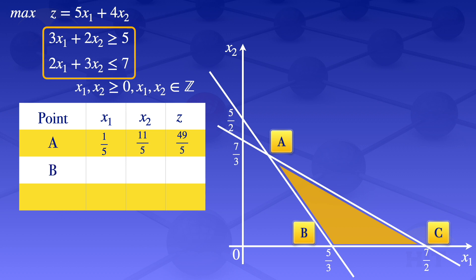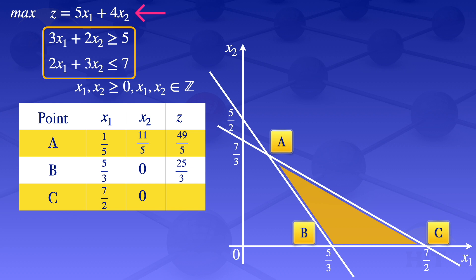At point B, we have x1 equals 5/3 and x2 equals 0. If we substitute this into the objective function, we get z equals 25/3. At point C, we have x1 equals 7/2 and x2 equals 0. Substituting into the objective function gives z equals 35/2.